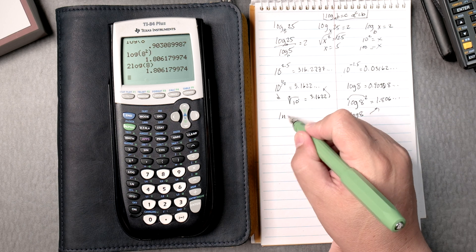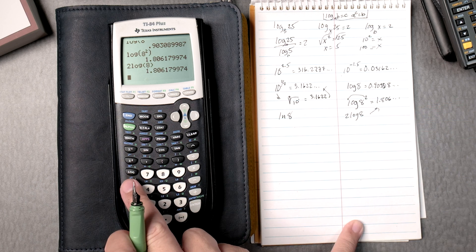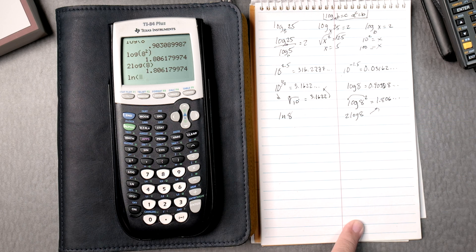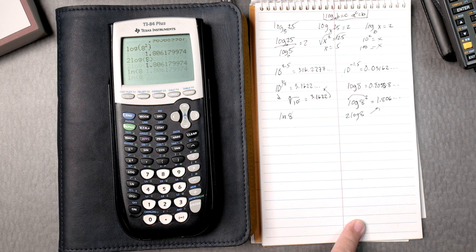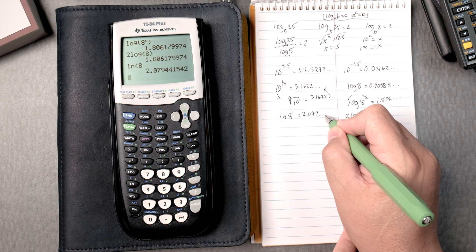Okay, how about the natural log of 8? Well, you press natural log, which is down here, natural log, press 8, enter. It gives you 2.079, it keeps going.